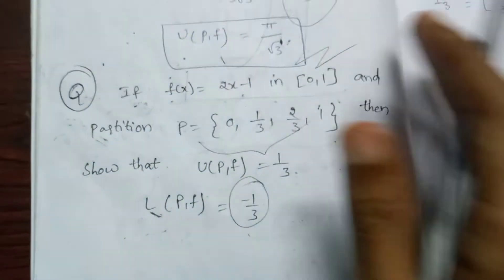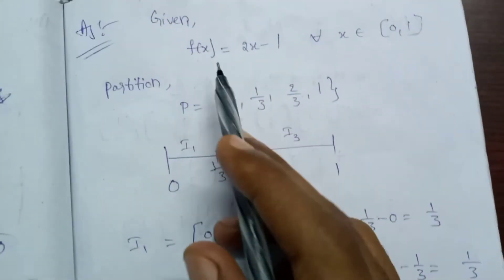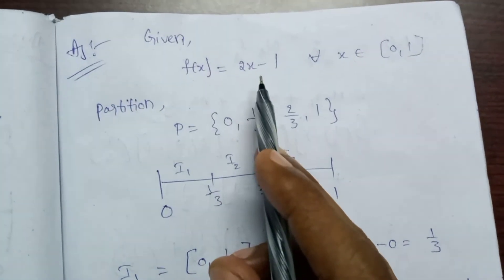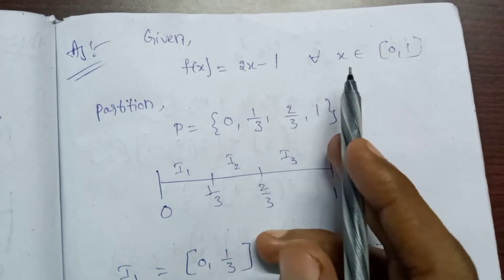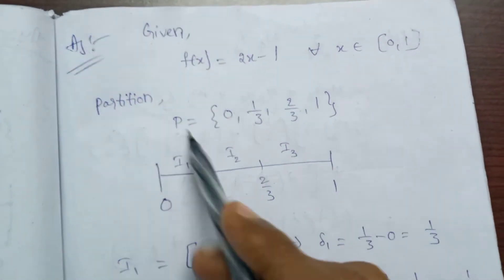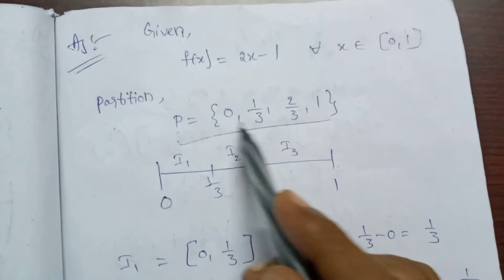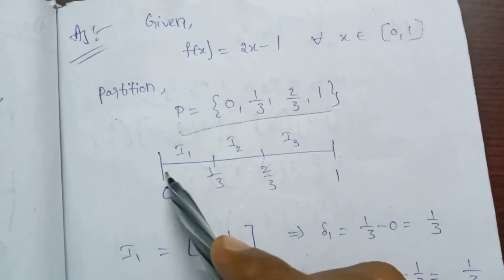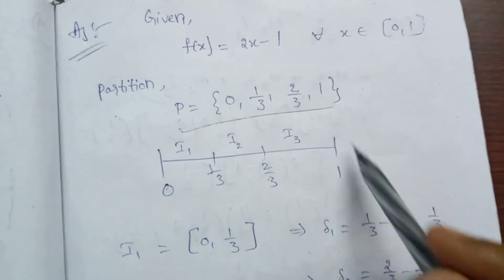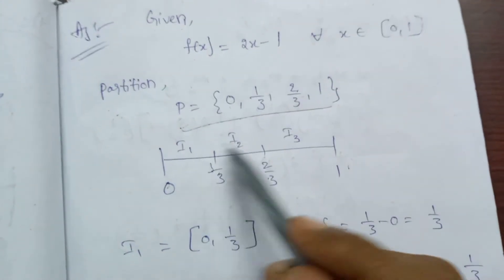The answer: given f of x is equal to 2x minus 1 for all x belonging to the closed interval [0,1]. The partition is {0, 1/3, 2/3, 1}, giving subintervals I1, I2, I3.